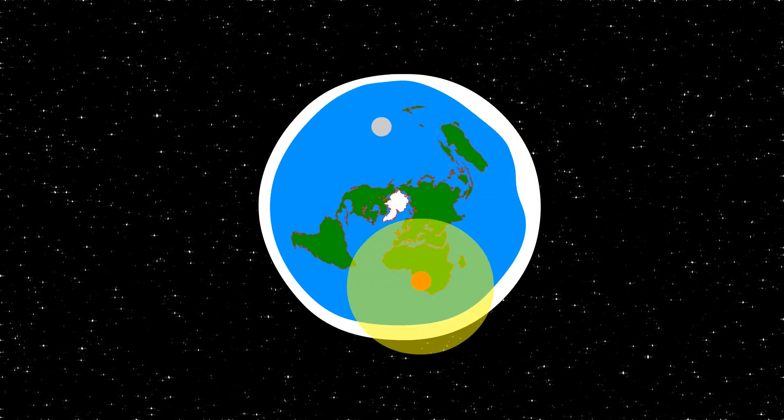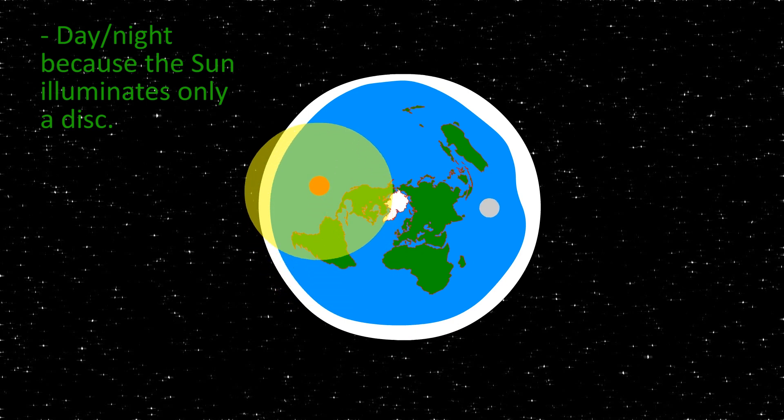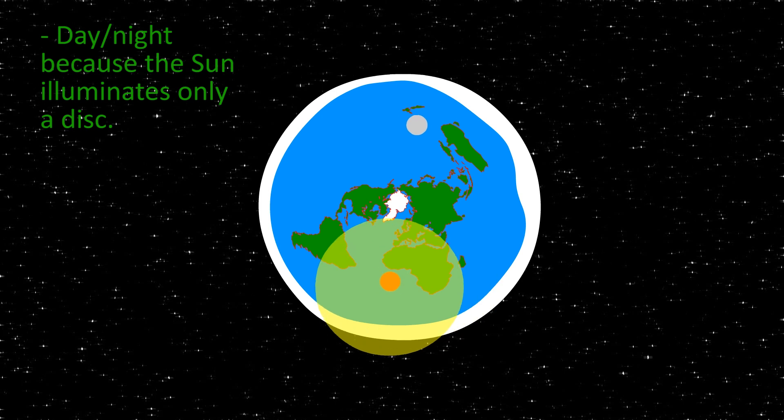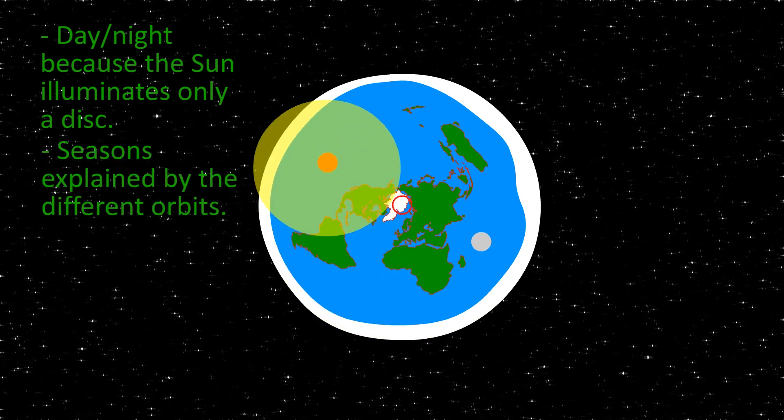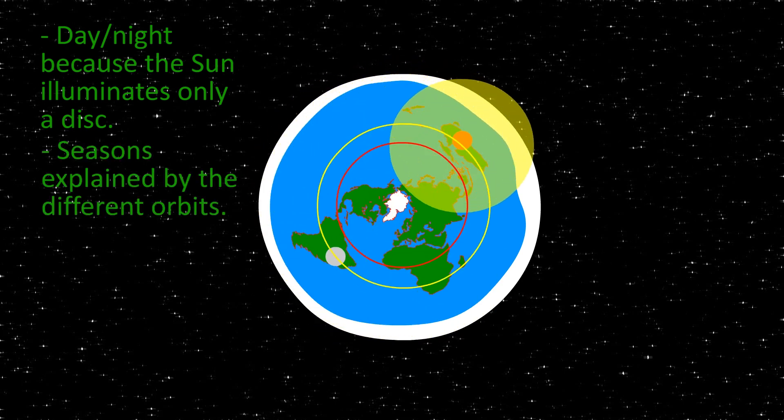They claim the Sun shines light into a spot and that is how we have day and night cycles. Furthermore, this model even explains how we have seasons. The Sun moves closer and farther away from the center of the disk or the North Pole as we know it.